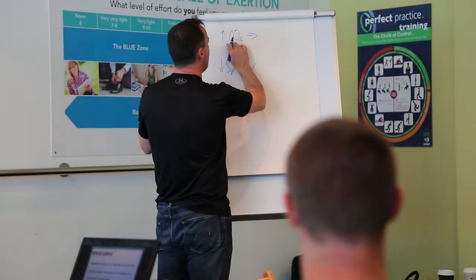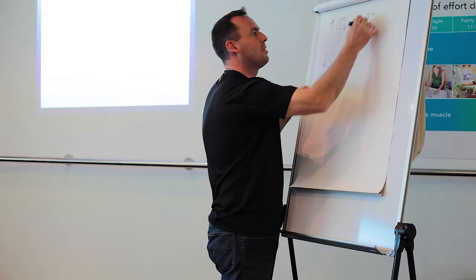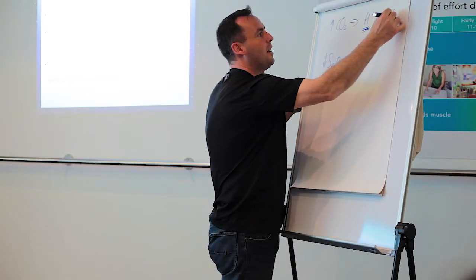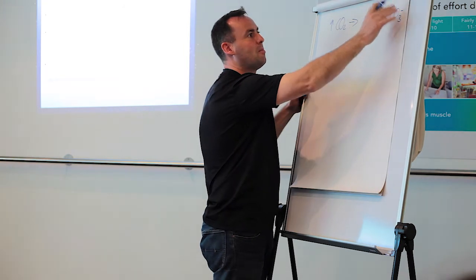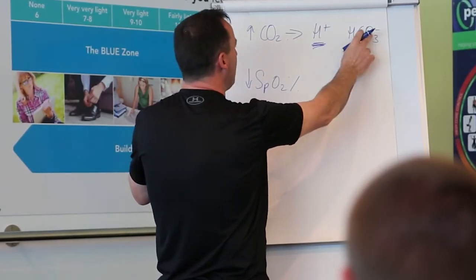You increase carbon dioxide. This forms carbonic acid and this dissociates into hydrogen ion and HCO3- which is your bicarb. So here is your buffer. This is your acid. This is your base.